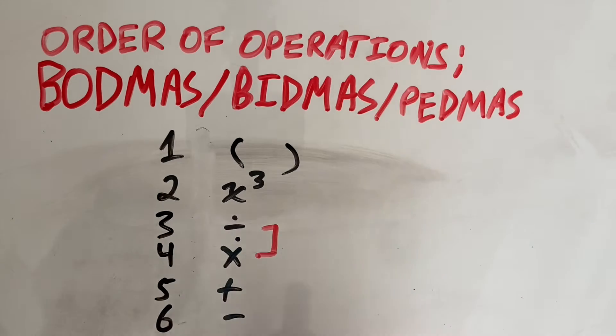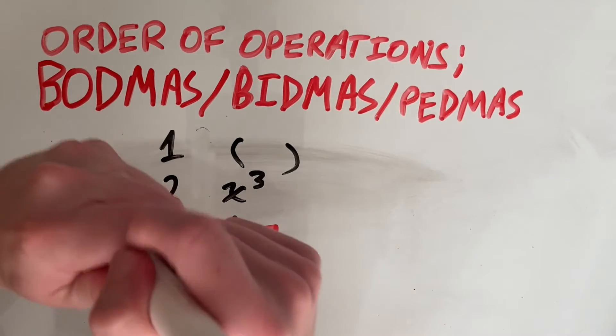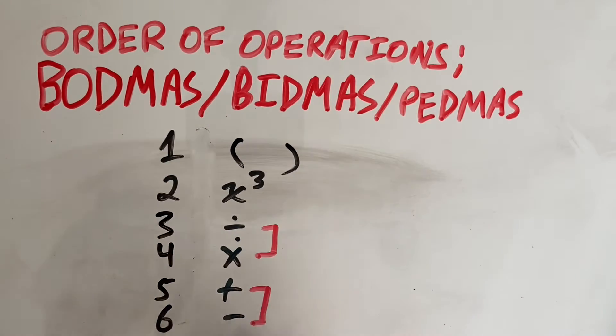So assume you work left to right. Whichever multiplication or division comes first, you do that one first. And that is the same with adding and subtracting. We work left to right because adding and subtracting are interchangeable. We will see more of that in this example.